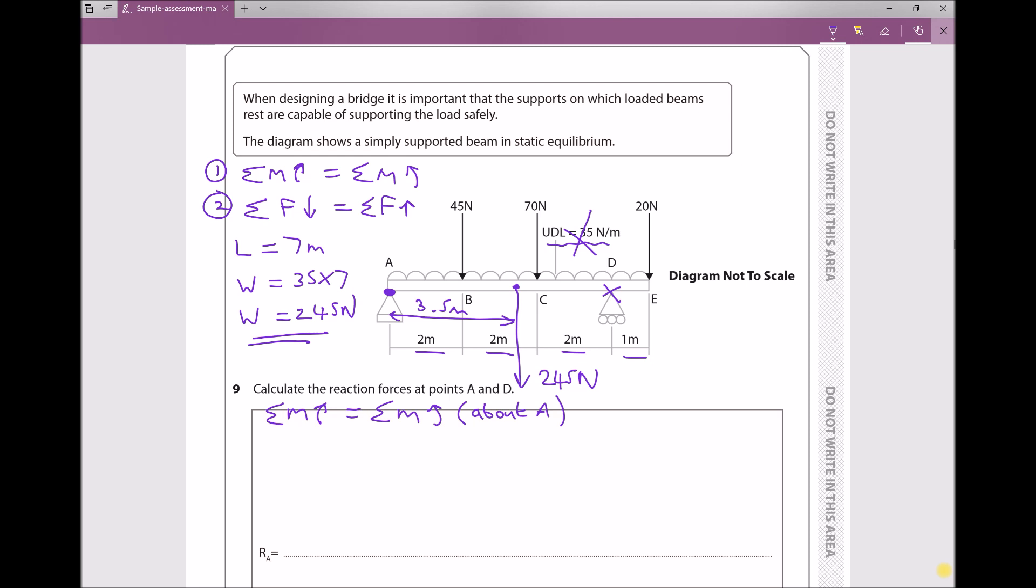Now if we look at each of those forces and if we imagine the beam pivoting at point A we can see that the 45 newton force is causing the beam to turn clockwise, the 70 newton force is causing it to turn clockwise, the 20 newton force is causing it to turn clockwise and so is the weight of 245 newtons. And in fact the only force that's trying to turn it anticlockwise is our force at point D.